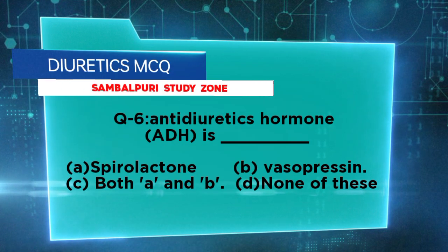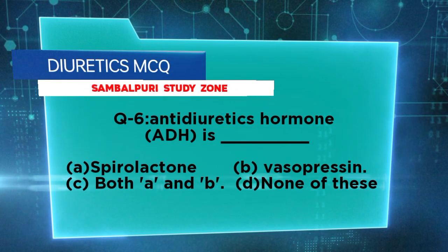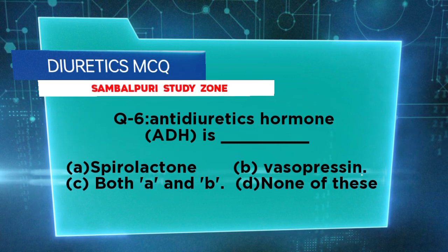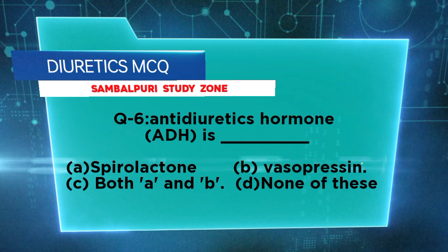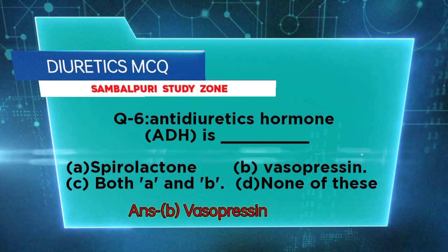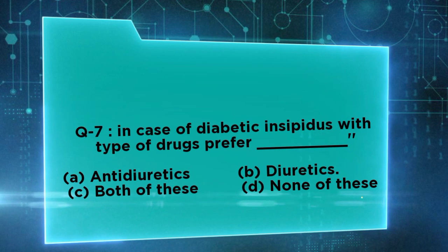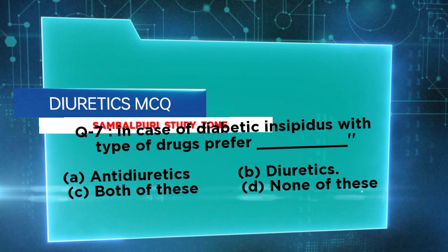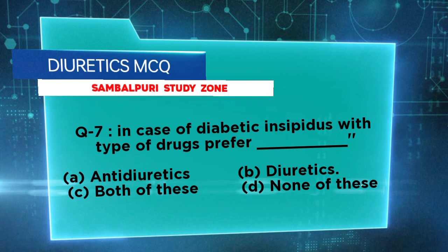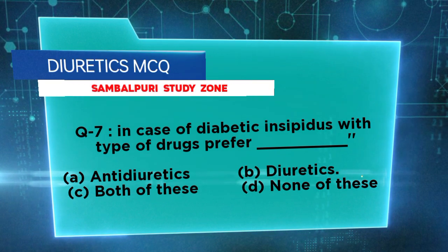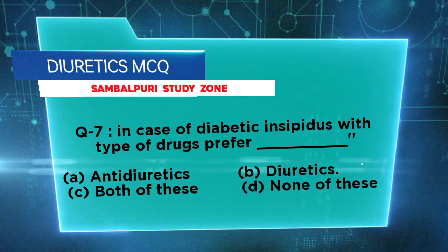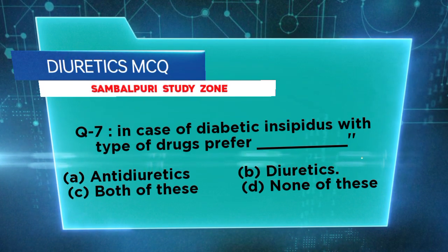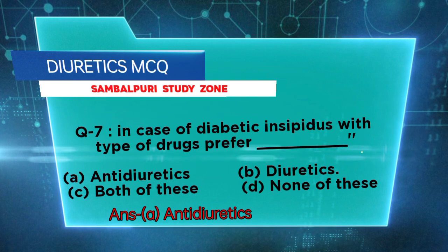Antidiuretic hormone (ADH) is also known as: spironolactone, vasopressin, both A and B, or none of these? Right answer: vasopressin. In CVD patients, which type of drug is preferred: antidiuretics, diuretics, both, or none? Right answer: antidiuretics.